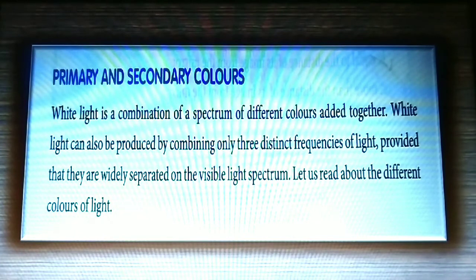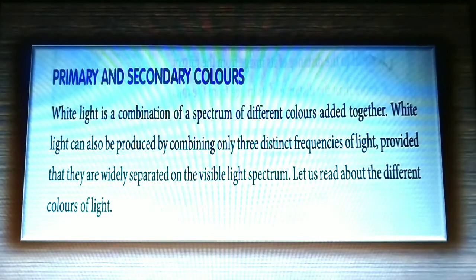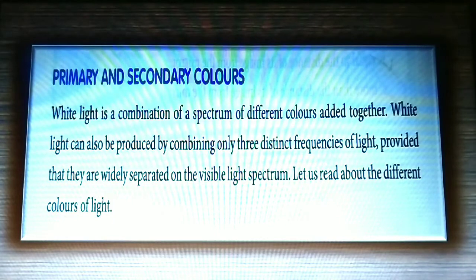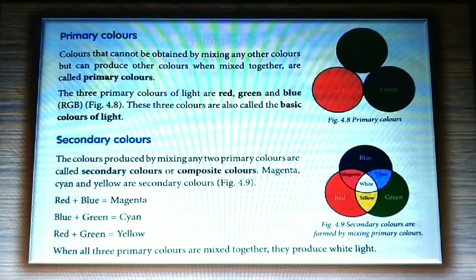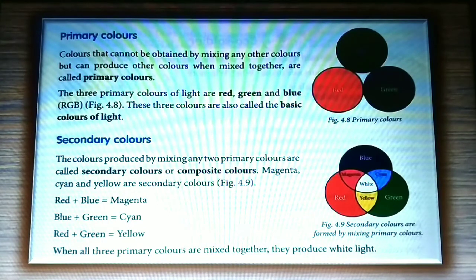Primary and secondary colors: white light is a combination of a spectrum of different colors added together. White light can be produced by combining only three distinct frequencies of light, provided that they are widely separated on the visible light spectrum. Here are the primary colors: colors that cannot be obtained by mixing any other colors but can produce other colors when mixed together are called primary colors. The three primary colors of light are red, green, and blue — also called the basic colors of light.